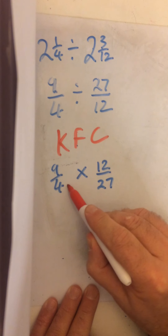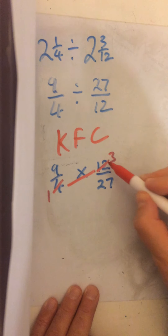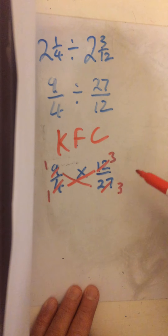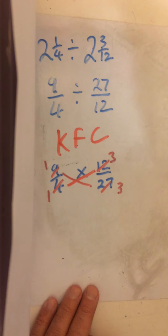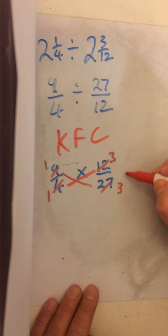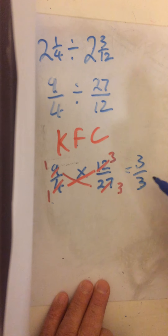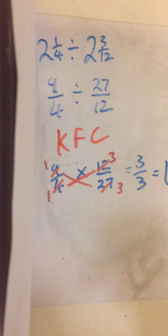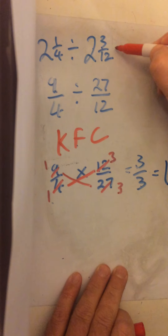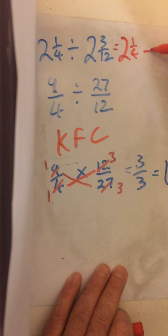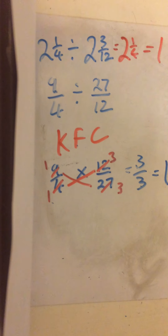Now we're back to multiplying, so check for cross-simplification. What goes into four and twelve? Four goes in — four becomes one, twelve becomes three. What goes into nine and twenty-seven? Nine goes in — nine becomes one, twenty-seven becomes three. So one times three over one times three is three over three, which is one. And actually, two and three-twelfths simplifies to two and a quarter, so I was dividing two and a quarter by two and a quarter — which is of course one.